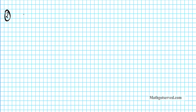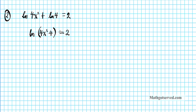Now let's look at problem 2. We are to solve and check the logarithmic equation: ln of 4x squared plus the natural logarithm of 4 equals 2. Remember the procedure: condense multiple logarithms first, then eliminate. Since we have a sum of logarithms, we apply the product property — the sum is the same as the logarithm of the product. So this becomes the natural logarithm of 4x squared times 4 equals 2, which simplifies to the natural logarithm of 16x squared equals 2.